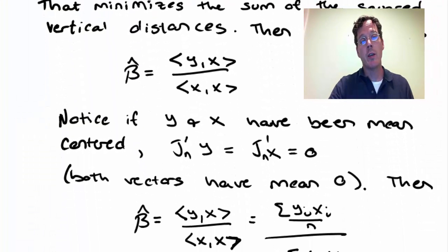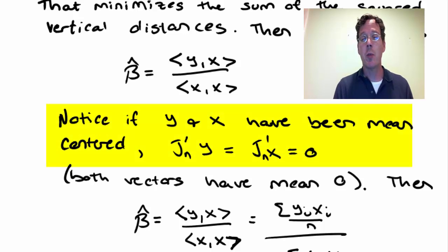Now imagine if y and x have both been mean centered, and this would be a reasonable setting for where we would like to have regression to the origin, because the origin is now right in the middle of the y and x points. You can center your y values by just subtracting off the mean from each coordinate. Same thing with your x values, subtract off the mean of the x's from each coordinate.